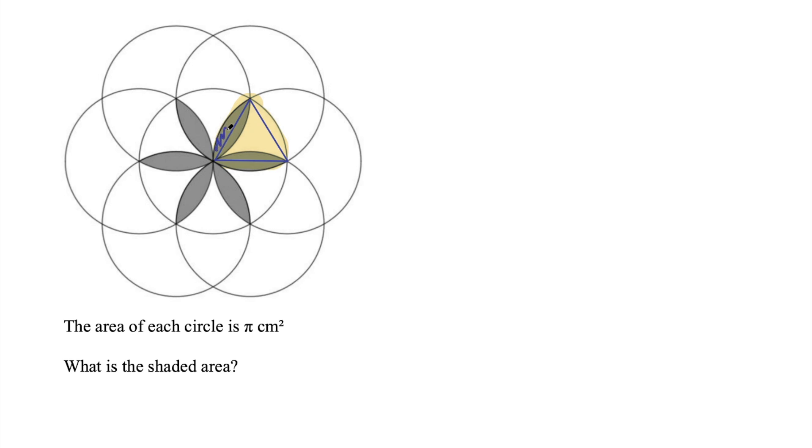To find this shaded area, all we really need to do is find one of these segments, because all of these shapes are the same. So if we can find that segment, we can multiply it by however many we have and we'll have our answer.